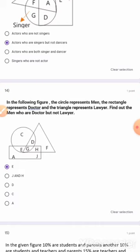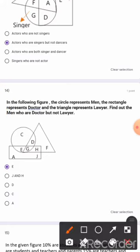Men, doctor, and triangle represents lawyer. Find out men who are doctor but not lawyer. E is the answer.